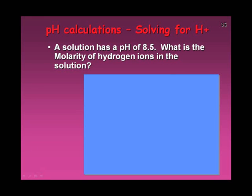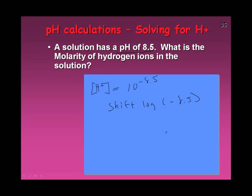If a solution has a pH of 8.5 and I want to know the molarity of the hydrogen ions, the H+ concentration is the anti-log: 10 to the minus 8.5. I hit shift log, then minus 8.5, and I get 3.2 times 10 to the minus 9. That's the molarity, the concentration. And 9 is within one unit of 8.5 — checks out.